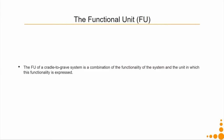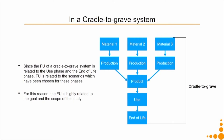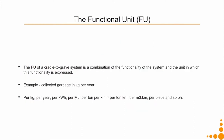The functional unit of a cradle-to-grave system is a combination of the functionality of the system and the unit in which the functionality is expressed. In a cradle-to-grave system, cradle is where all materials are sourced from, then production into the product, then use, then end of life. The functional unit is a combination of the functionality — what the system is supposed to output — and the unit in which that functionality is expressed.